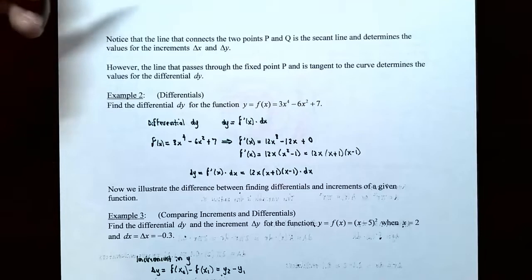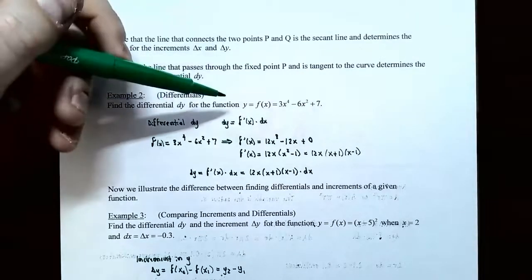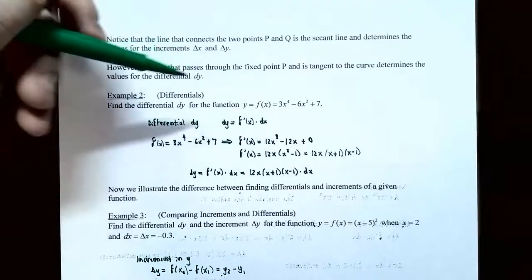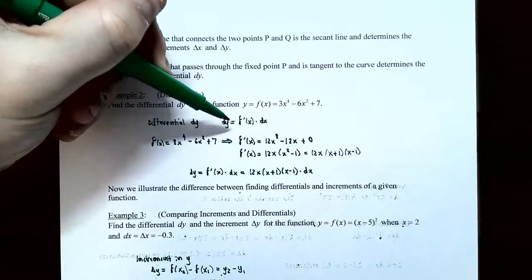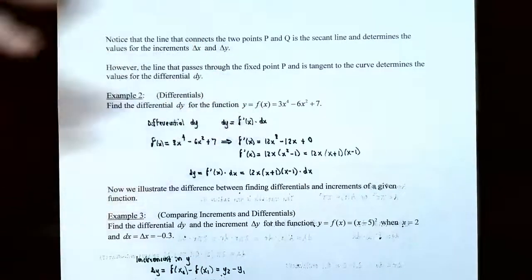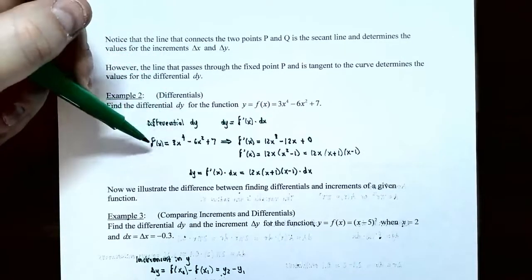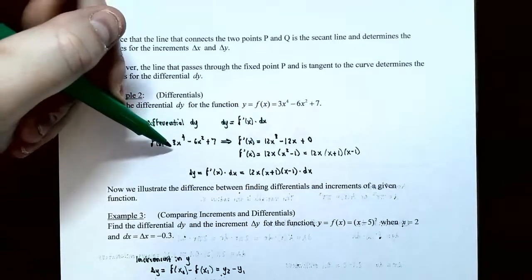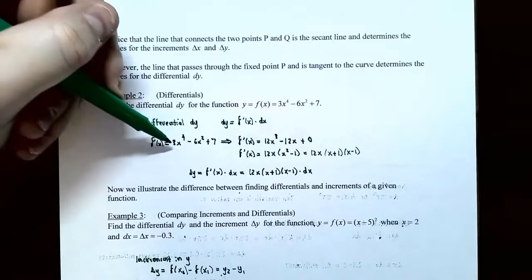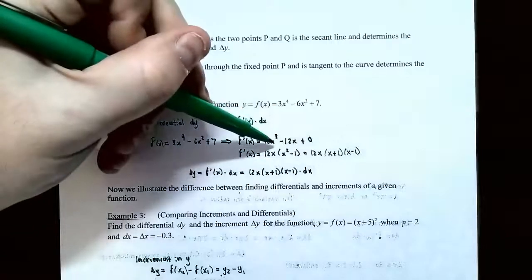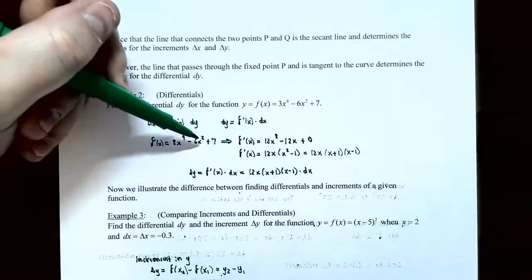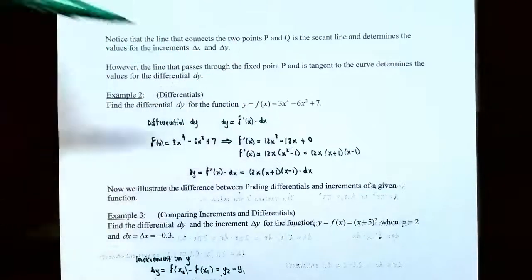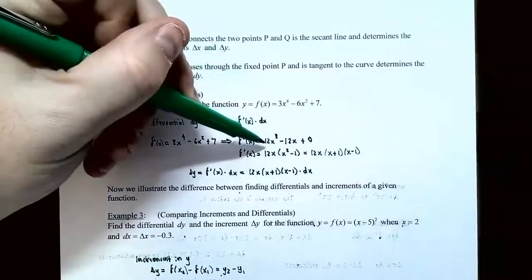Example 2 — Differentials: Find the differential dy for the function y equals f of x equals 3x to the fourth minus 6x squared plus 7. By definition, dy equals f prime of x times dx. Taking the derivative using the power rule, sum and difference rule, and constant multiple property: bring the exponent 4 down to get 12x cubed for the first term, bring exponent 2 down to get 12x for the second term, and the derivative of 7 is 0. So f prime of x equals 12x cubed minus 12x.